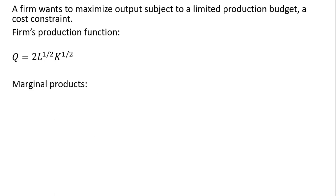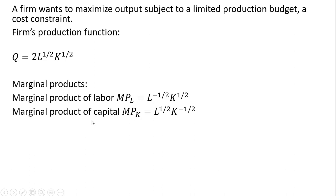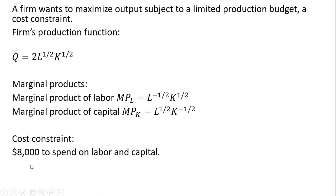We're going to be given the marginal products of labor and capital. The marginal product of labor — which if you're doing calculus is just the partial derivative of the production function with respect to labor — and the marginal product of capital, which would be the partial derivative with respect to capital. So this is all given.